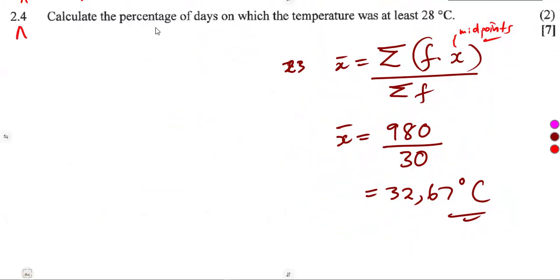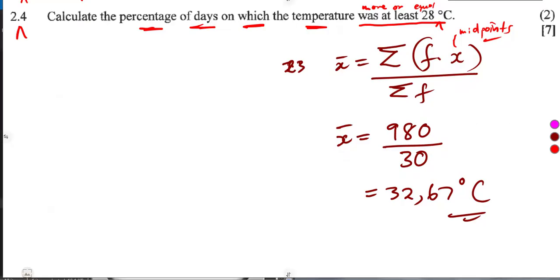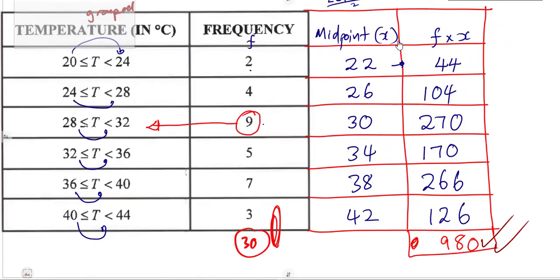2.4: Calculate the percentage of days on which the temperature was at least 28 degrees Celsius. At least means more than or equal to this, starting from 28, more than that. How do we answer this type of question? We need the percentage of days, so we must have the number of days where the temperature was more than or equal to 28.